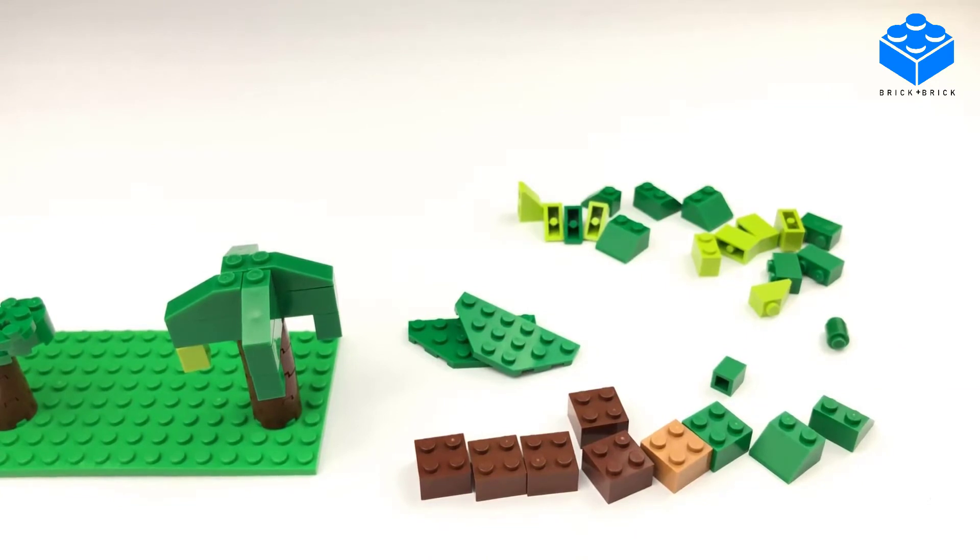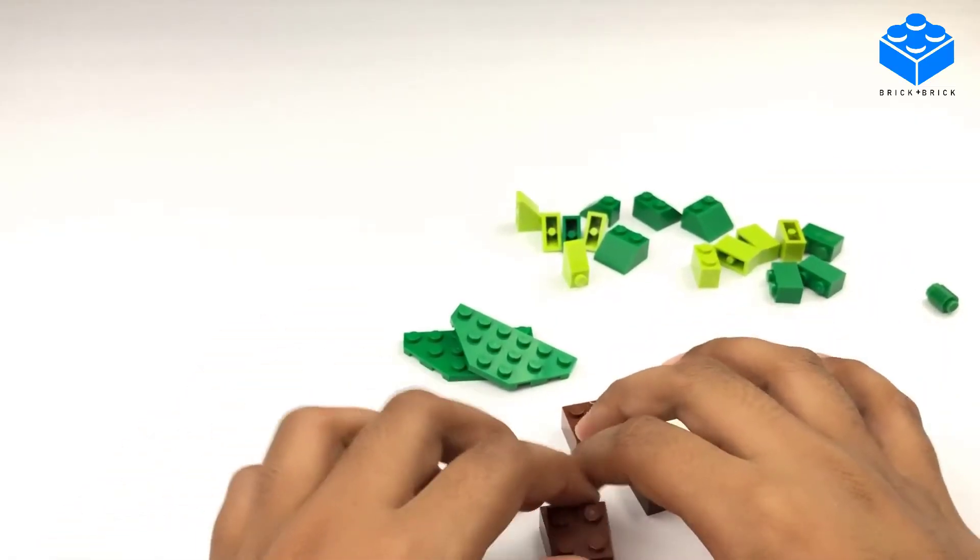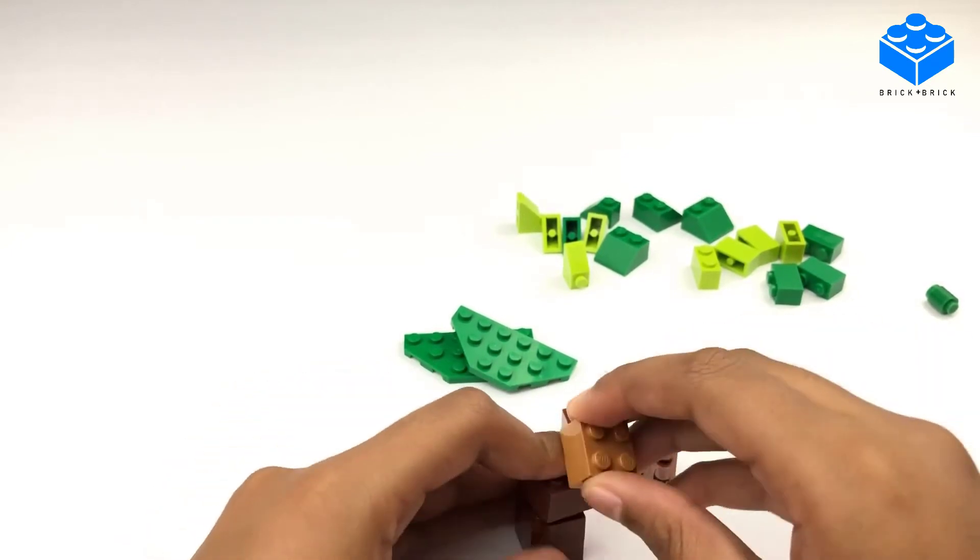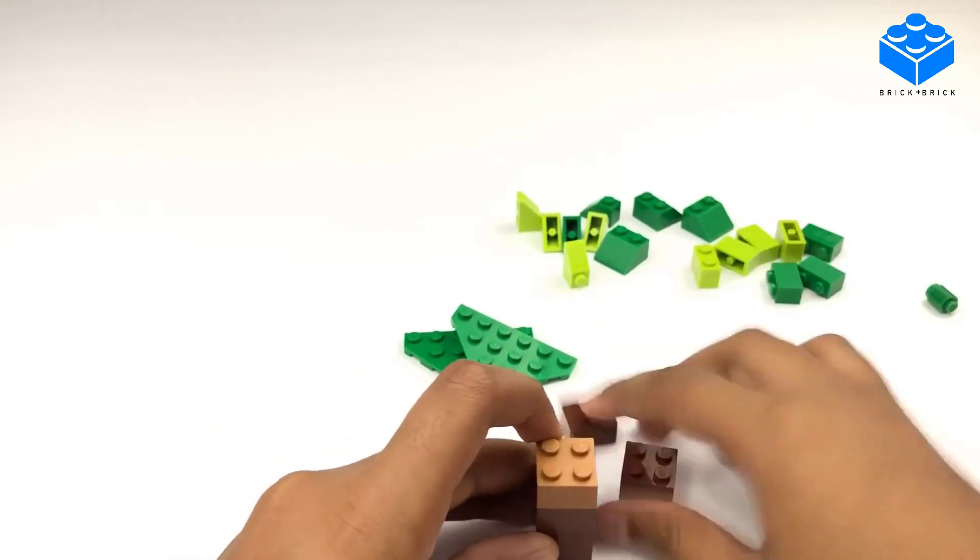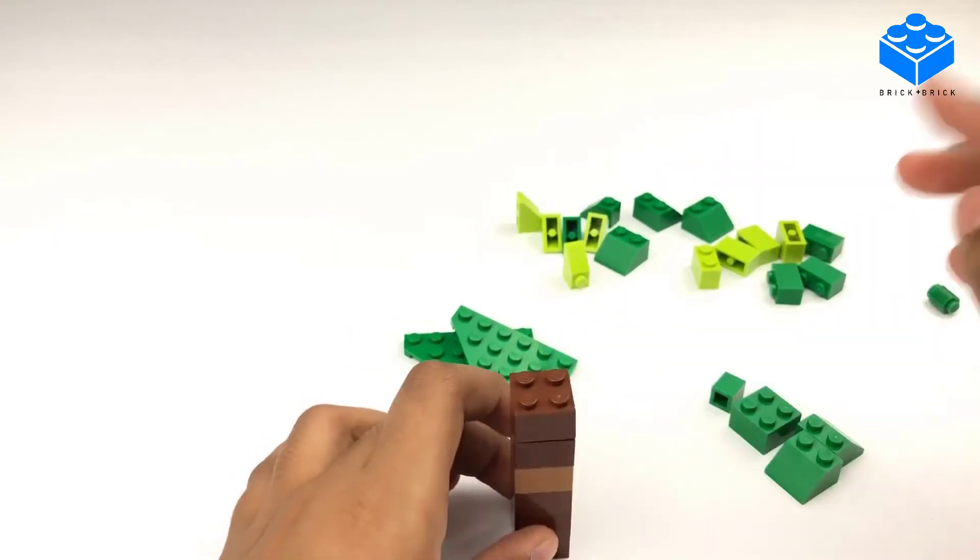So now, let's start the building. So, what we're going to start with are the tree trunks. Which are going to be these brown two by twos.